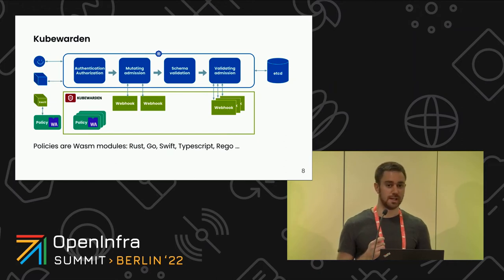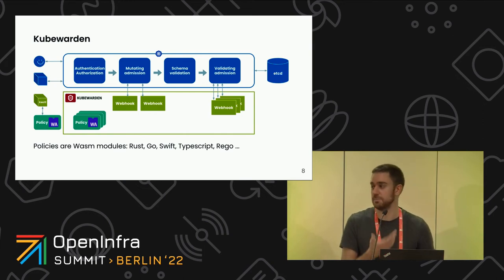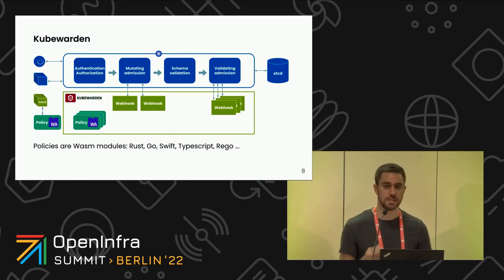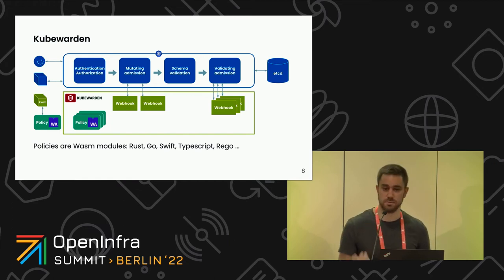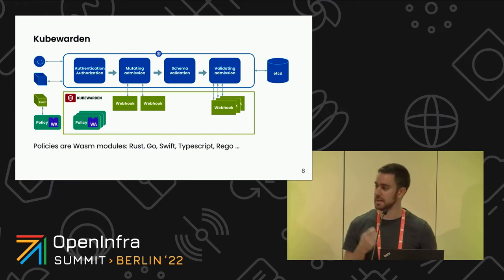We need a policy engine. A policy engine — for example, Kubewarden — is an open source project we are working on. With Kubewarden, we can enforce signature verification. It's installed as a Helm chart, it's open source with a community, and we have submitted it to the CNCF.